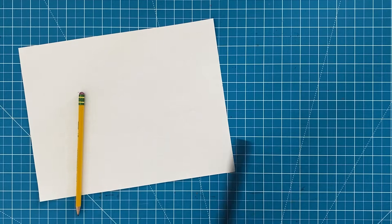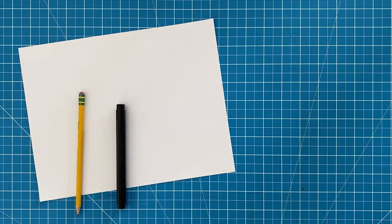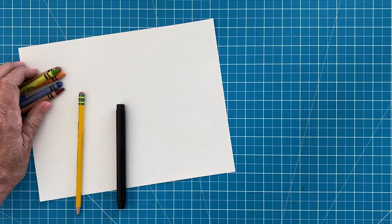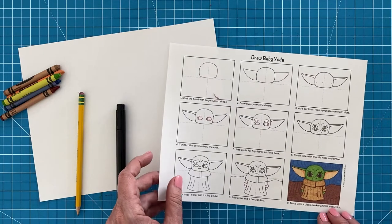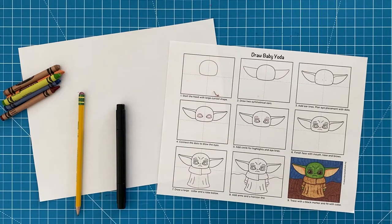Here are the art supplies you are going to need: a sheet of drawing paper, a pencil with an eraser, a black marker and some crayons. If you want to follow along with a printed set of directions, this tutorial comes from my draw baby Yoda lesson on my website.